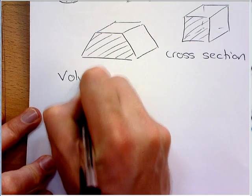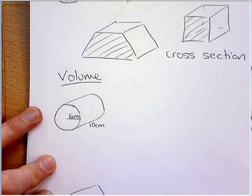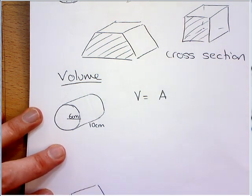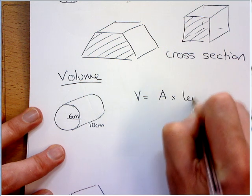So, when it's three-dimensional, we're most interested in the volume of these shapes. And you are told on your formula sheet that the volume is the area of the cross-section times the length of the prism.